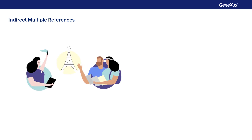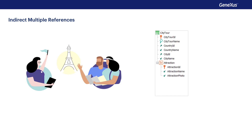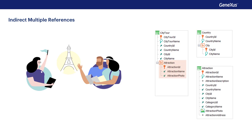Suppose we need to register the tours that are offered to the Travel Agent's customers for visiting the different tourist attractions of a given city. To do so, we'll create the City Tour transaction, where in the first level, in addition to registering the name of the tour, we'll specify its country and city. The second level will indicate the tourist attractions visited during the tour. Note that each tourist attraction has a country and city defined, so if we do nothing, the user may enter for a City Tour an attraction that's not in the same country or city of the City Tour.